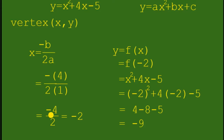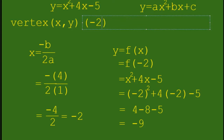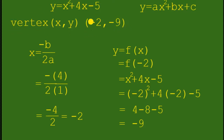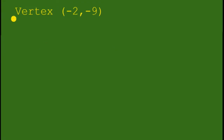So positive 4 plus negative 8 is negative 4, minus 5 gives negative 9. So we have x is equal to negative 2 and y is equal to negative 9. Our vertex ordered pair is negative 2 and negative 9.